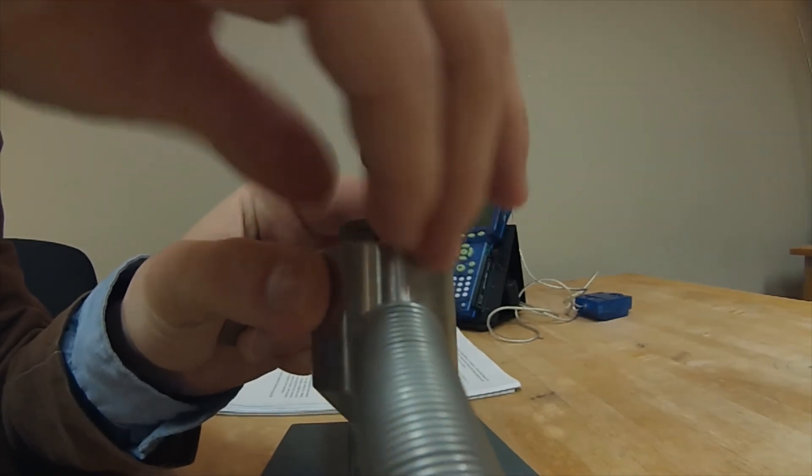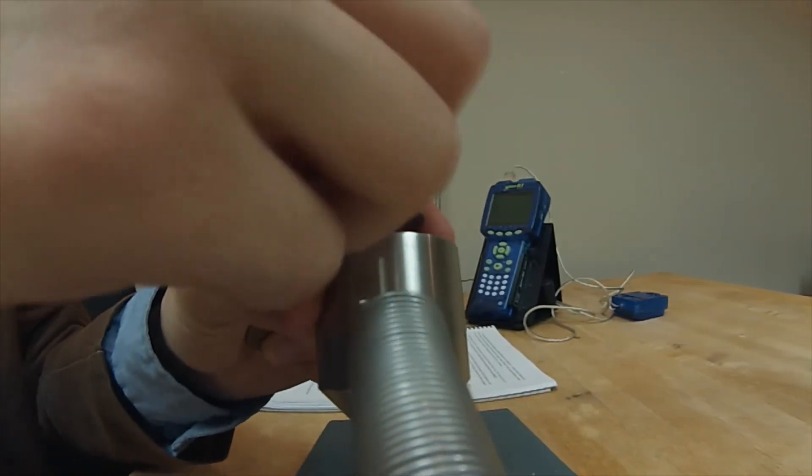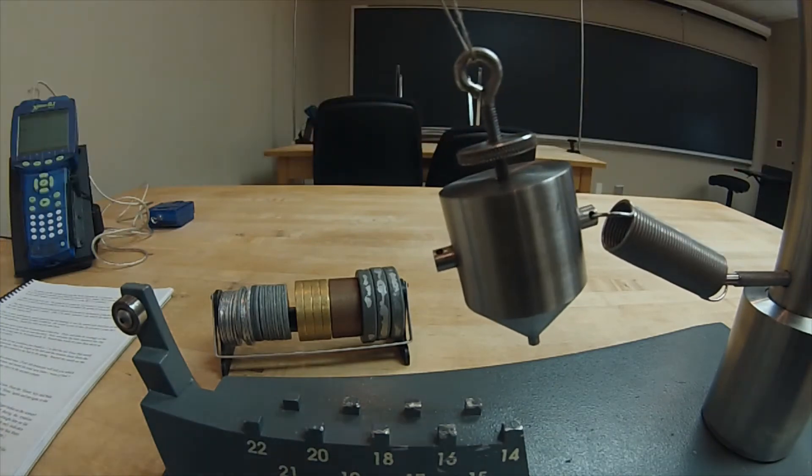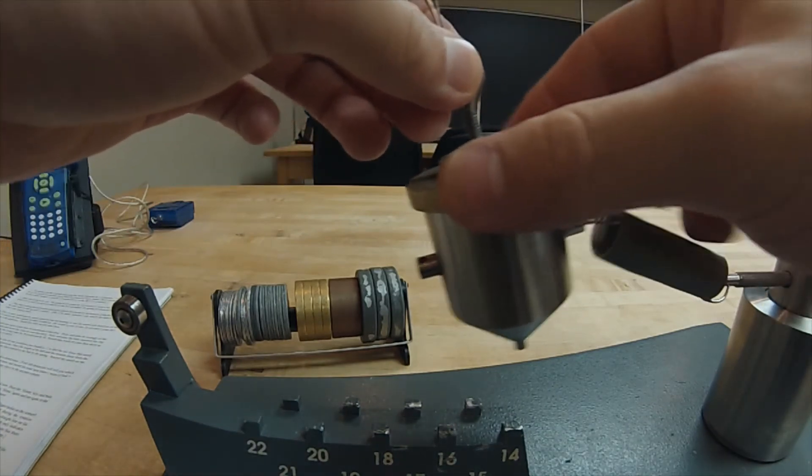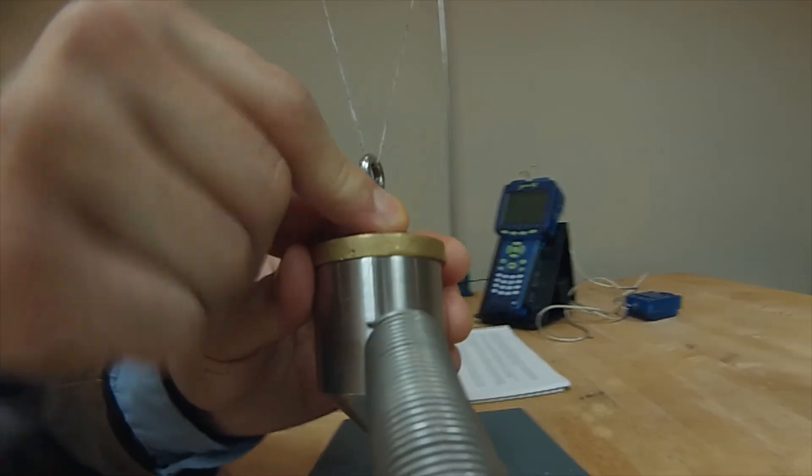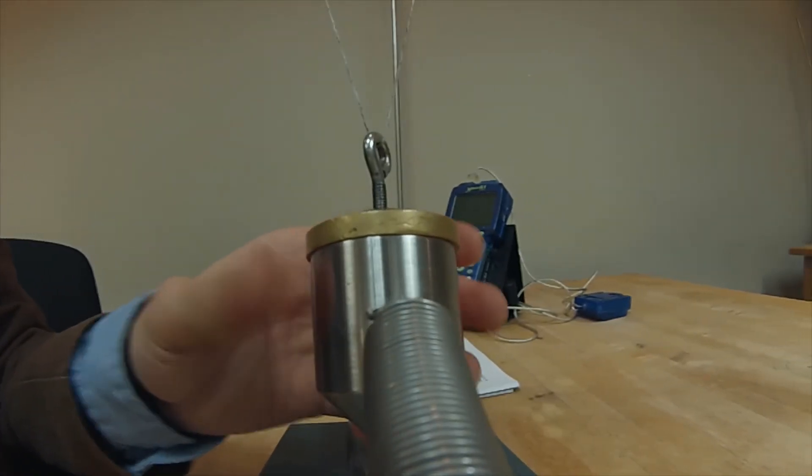Next, without changing the position of the bob or the spring, carefully loosen the threaded washer on the top of the bob and mount a slotted mass on the top of the bob. Your instructor should specify the correct value, but make sure to adequately tighten the threaded washer so that the slotted mass cannot come loose inadvertently.